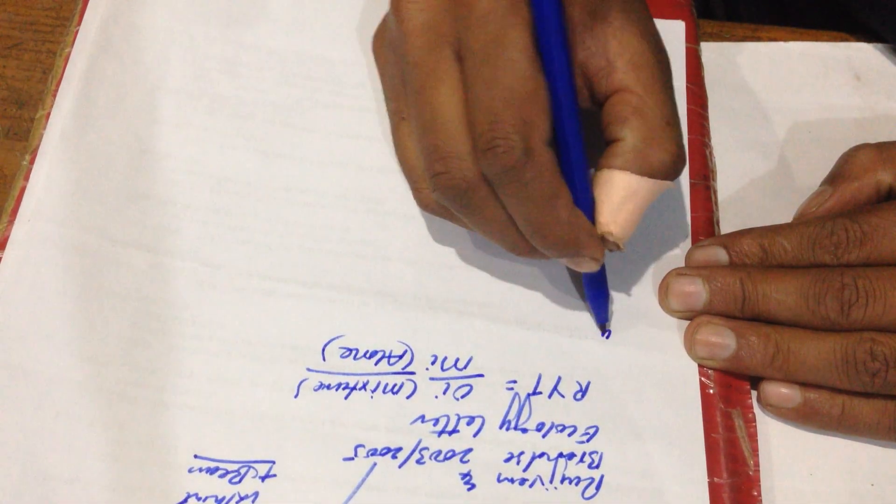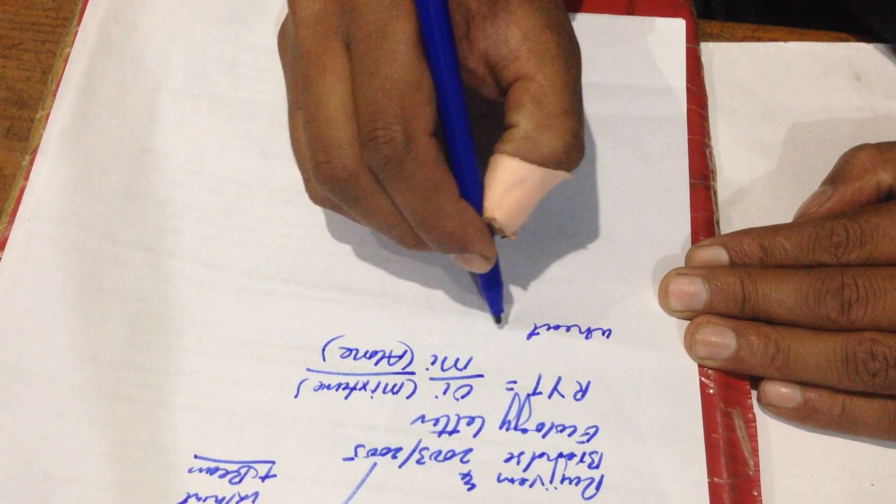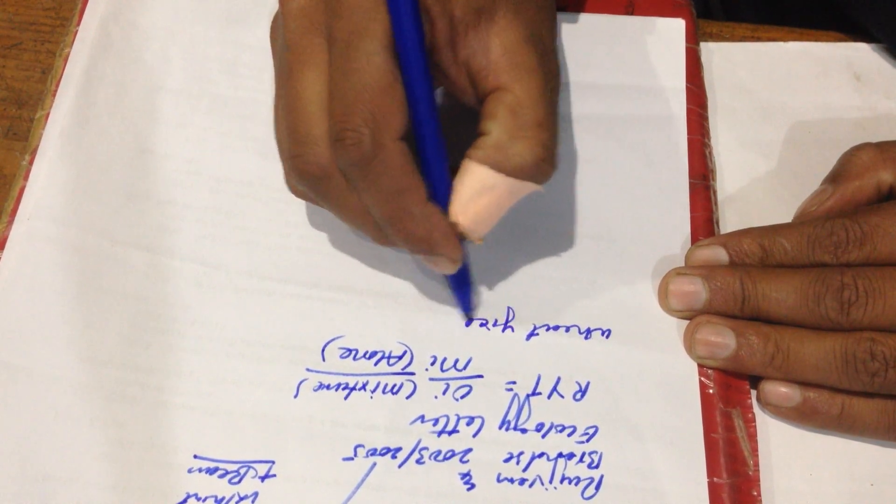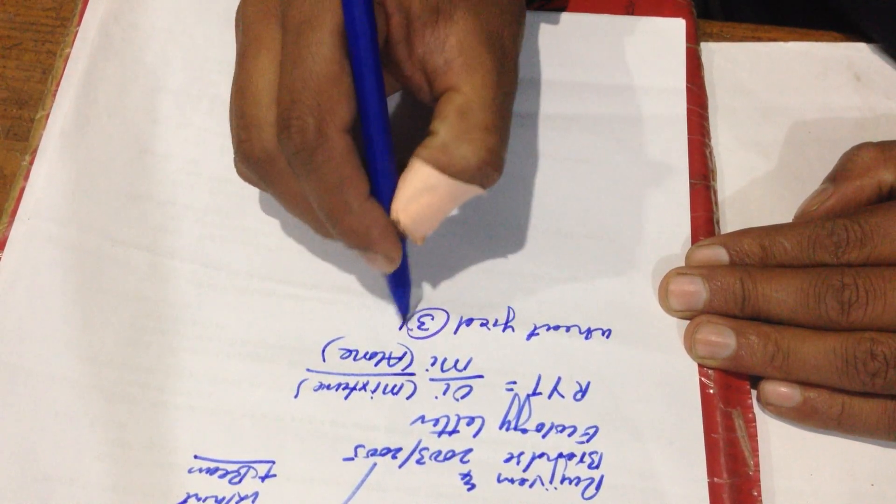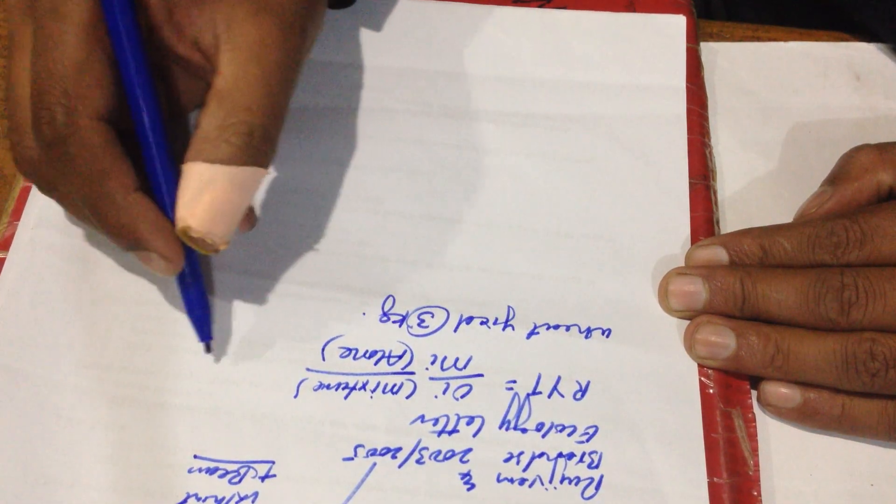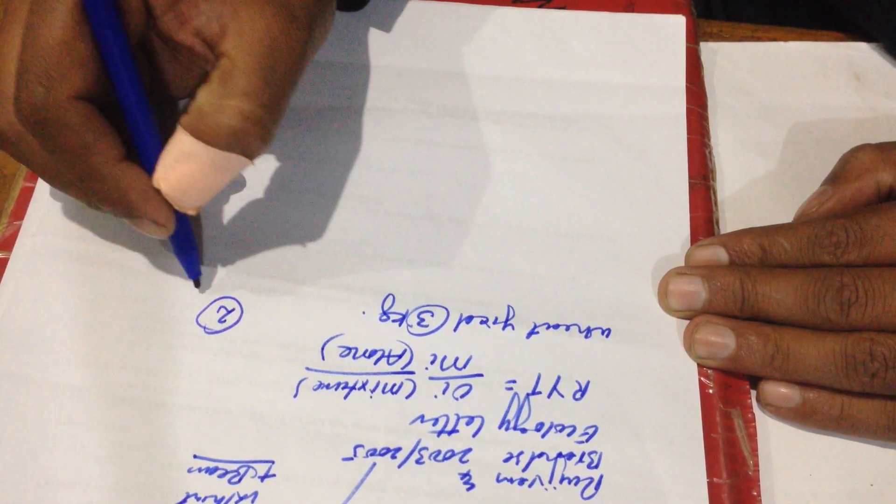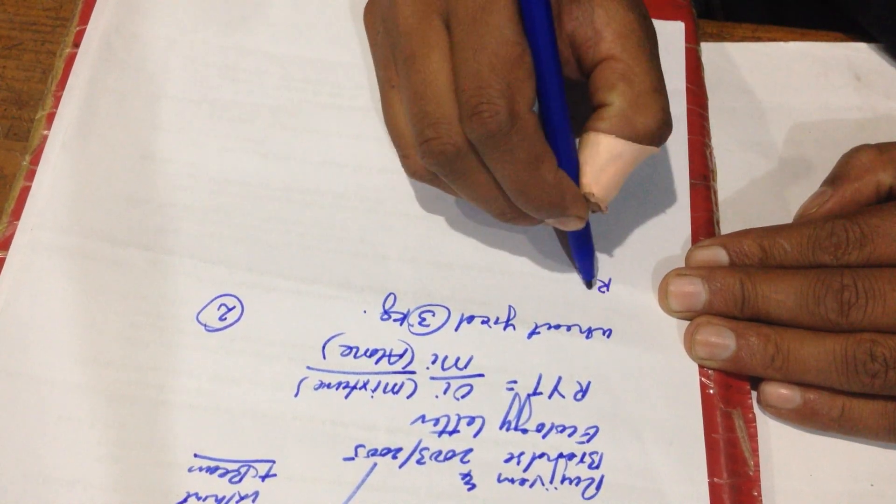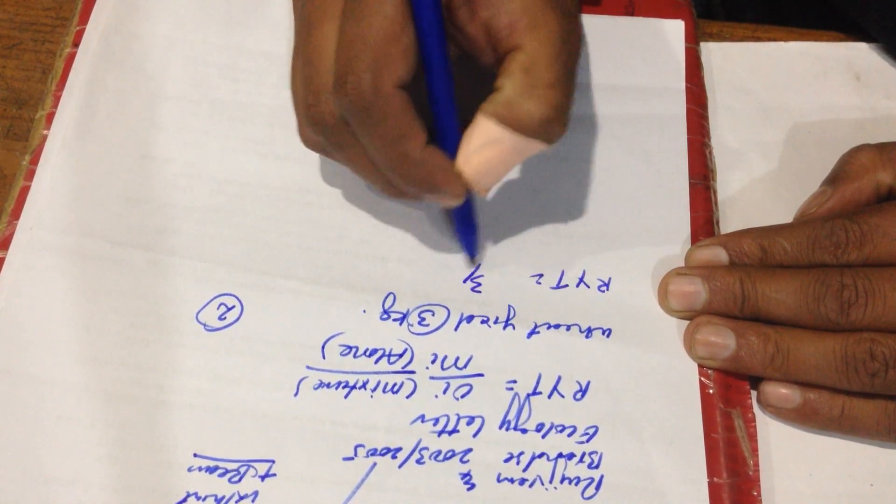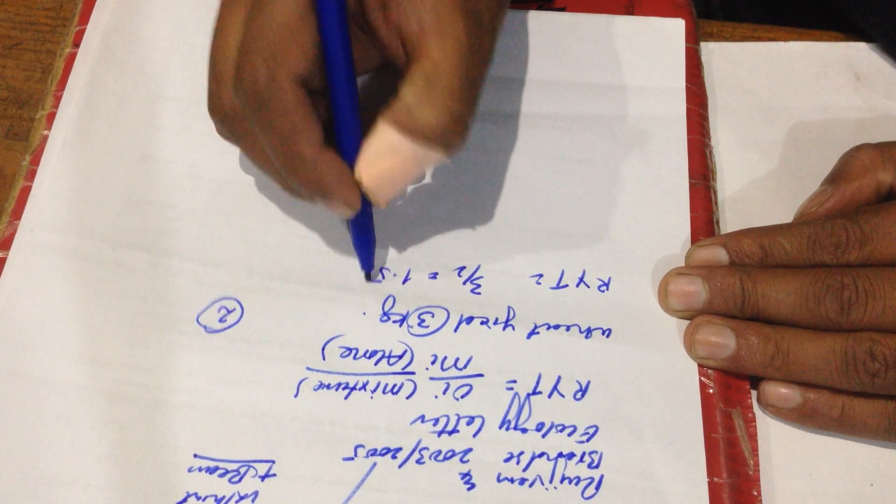In the first case, the yield is 3 kg, while in the second case the yield is 2 kg. So RYT is equal to 3 divided by 2, which is equal to 1.5.